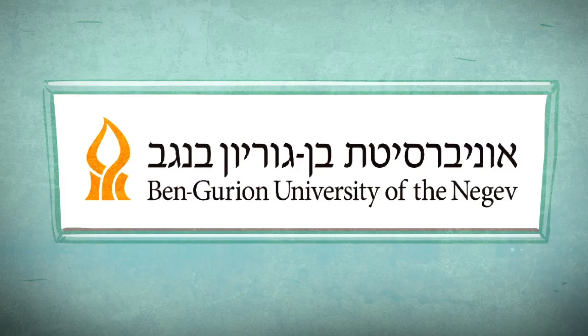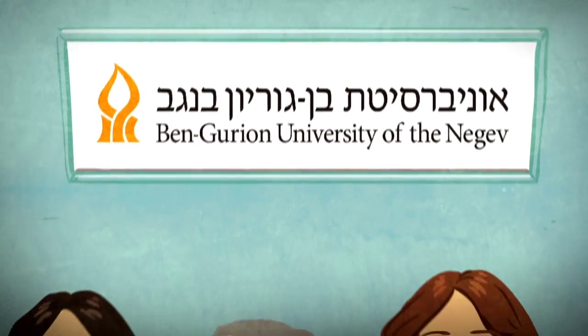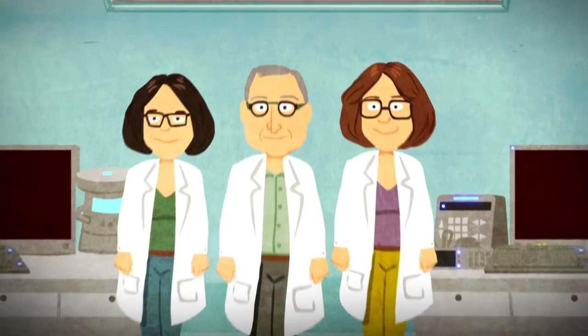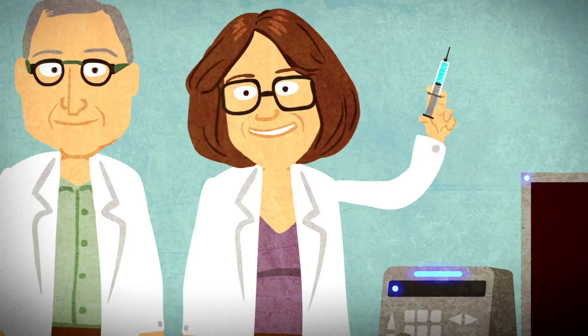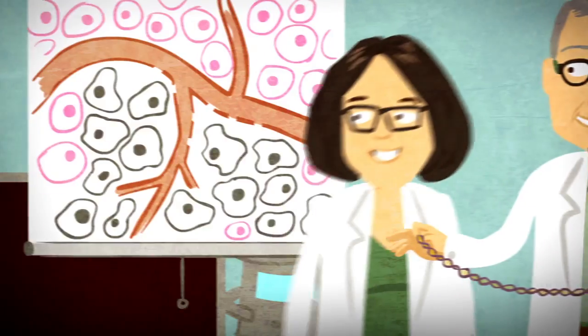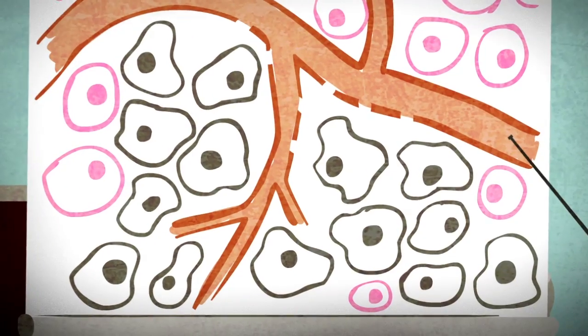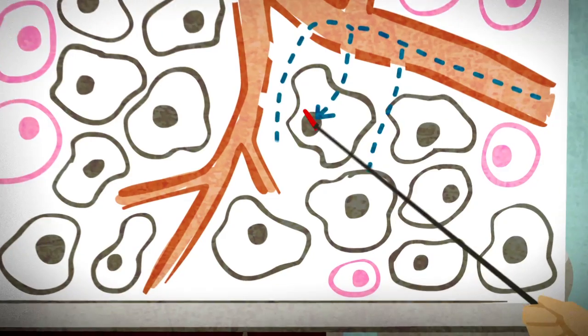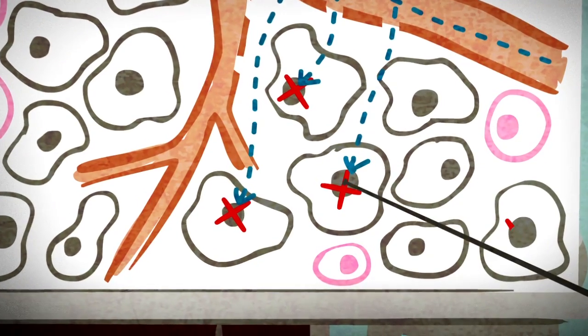Ben Gurion University scientists led by Professor Yossi Kost are developing a system to sneak medication like chemo or genes past the body's defense mechanisms and straight to their destination, even a cell organelle, like the nucleus inside a cancer cell.